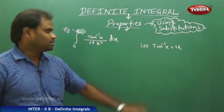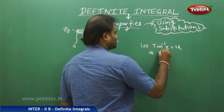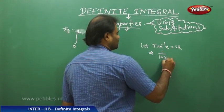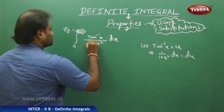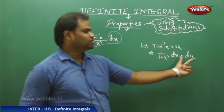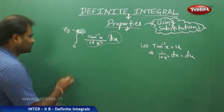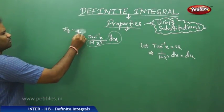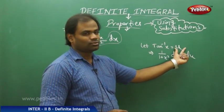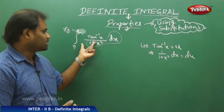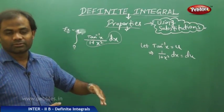We assume tan⁻¹x equals u. Differentiating both sides, d/dx of tan⁻¹x is 1/(1+x²), so (1/(1+x²))dx = du. This is very helpful because it can be substituted with du. In this definite integral, the lower limit is 0 and the upper limit is 1, so once we substitute, all variables in x transform into u, and the limits of x transform into limits of u.